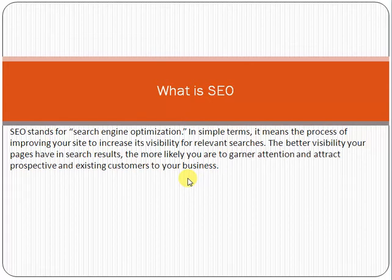If your blogging website has a good ranking and is coming on the first page of Google, when someone searches on Google and your page appears on the first page, obviously there are high chances that people will visit your website or blog, click on advertisements, and you can get more business. However, if your blogging website is coming on the 50th or 100th page of Google search, obviously there are very low chances of getting visibility and traffic from Google.